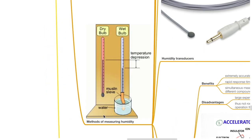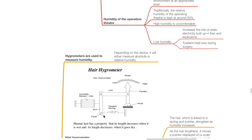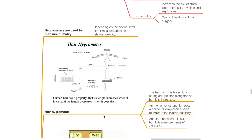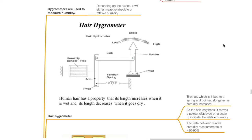Methods of measuring humidity. Hygrometers are used to measure humidity. Depending on the device, it will either measure absolute or relative humidity. The hair hygrometer: hair — either human or animal hair — which is linked to a spring and pointer, elongates as humidity increases, and this is displayed on a scale to indicate the relative humidity. It is accurate between relative humidity measurements of 30 to 90%.